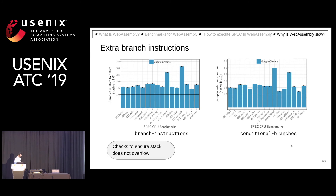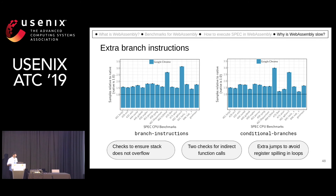Remember, there were two checks: one to ensure that the stack does not overflow, and the other to ensure that indirect function calls are valid. There are also some extra jumps added to avoid register spilling, and these three reasons lead to an increased number of branches.